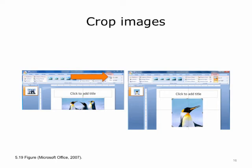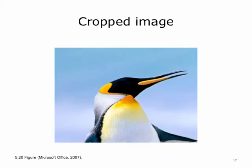To crop an image, choose the cropping tool on the image editing menu bar and use the guides — black lines and angles in the corner of the image — to crop the image and see only a portion of the original image. This cropped image shows one penguin instead of the original image of three penguins.